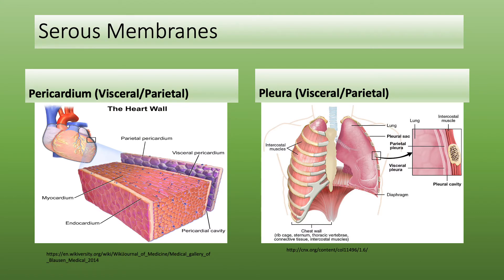The heart and lungs are covered with double-layered membranes. The membrane that covers the lungs is called pleura, and the membrane that covers the heart is the pericardium. The inner layer that attaches to the organ is called the visceral layer, and the outermost layer which covers the cavity they are in is called the parietal layer.